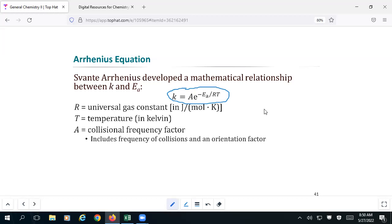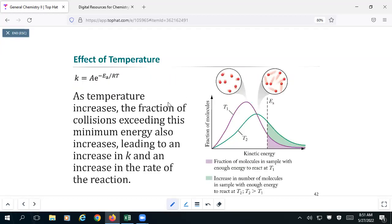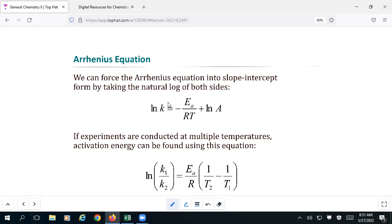So like we saw with the integrated rates, there's a solution, a graphical solution. And that graphical solution involves, since we are dealing with the natural exponent here, the natural log. If we apply the natural log to both sides of that equation, and using our rules of algebra and pre-calculus, we can take the Arrhenius equation and force it into slope-intercept form by taking that natural log of both sides. That gets rid of that natural exponent factor and it turns it into a form that we can use.